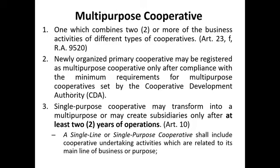There are also other requirements under the implementing rules. The second option is to transform a single cooperative into a multi-purpose cooperative, but there is a requirement: you must have been in operation for at least two years before the transformation. You can find this in Article 10 of RA 9520. A single-purpose cooperative may be transformed into a multi-purpose one, but you must have been in operation for at least two years. The definition of a single-line or single-purpose cooperative is one undertaking activities related to its main line of business or purpose.